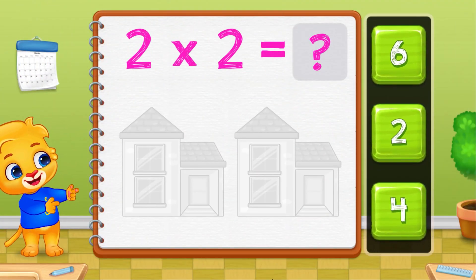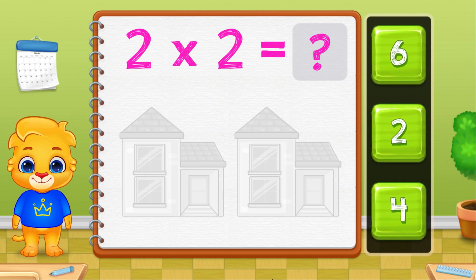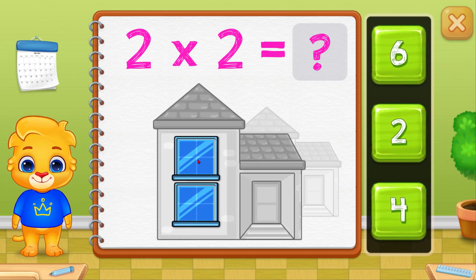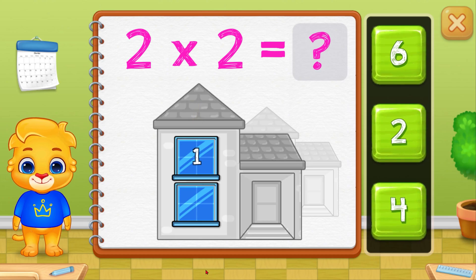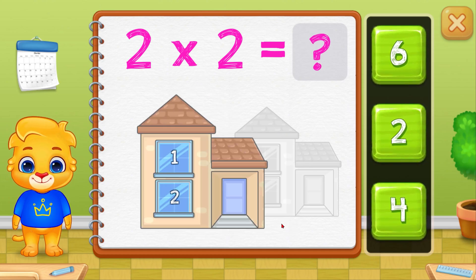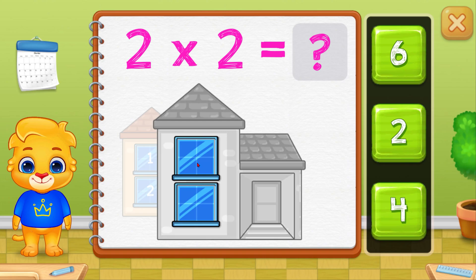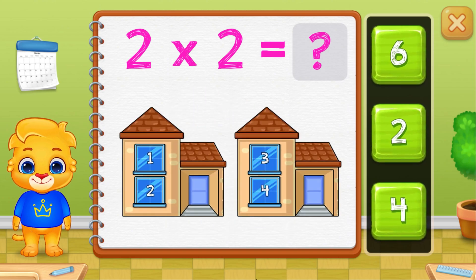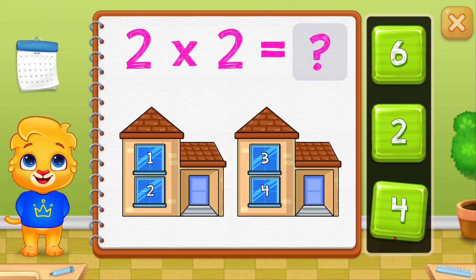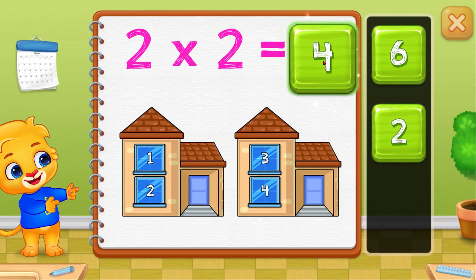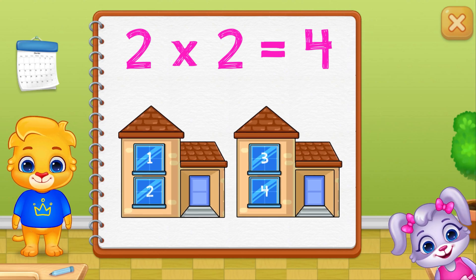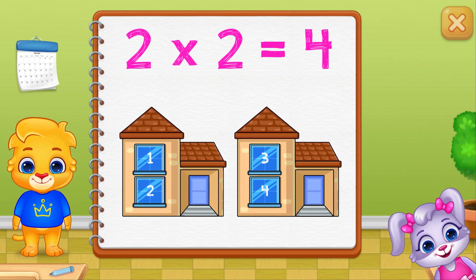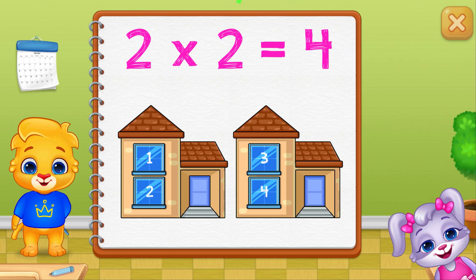Let's learn to multiply using groups. One, two, three, four. Two times two equals four. Woohoo!